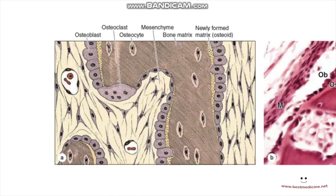We're going to start with the cells of bone tissue. Some of the cells I mentioned earlier were present inside the bone matrix itself — those are called osteocytes. They had their little canaliculi connecting them with other cells.